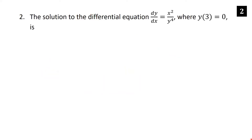The solution to the differential equation dy/dx equals x squared over y to the fourth, where y of 3 is equal to zero. We're going to use separation of variables here. We can just cross-multiply: y to the fourth times dy equals x squared times dx. Now we integrate each side. We get y to the fifth over 5 equals x to the third over 3 plus c.